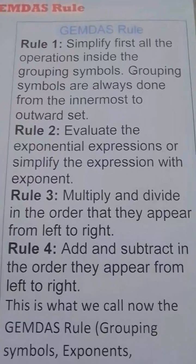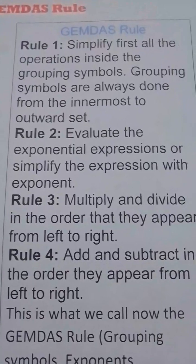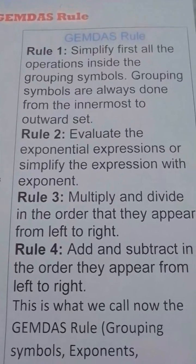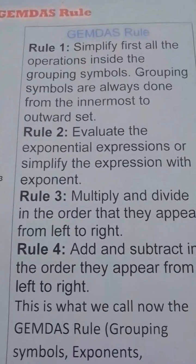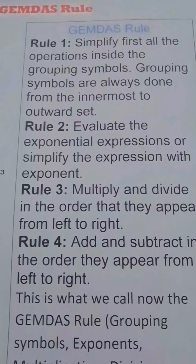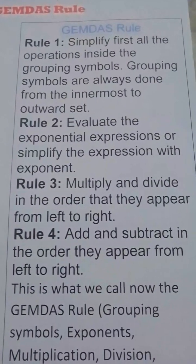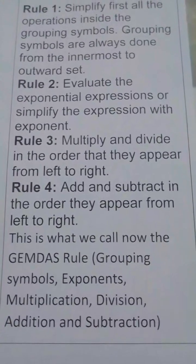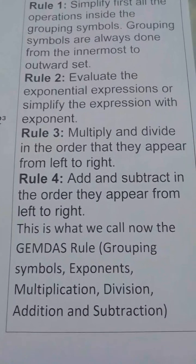Let's start with the GEMDAS rule. Rule number one: Simplify first all the operations inside the grouping symbols. Grouping symbols are always done from the innermost to outward set. Rule number two: Evaluate the exponential expressions or simplify the expressions with exponent. Rule number three: Multiply and divide in the order that they appear from left to right. Rule number four: Add and subtract in the order they appear from left to right. This is what we call now the GEMDAS rule.